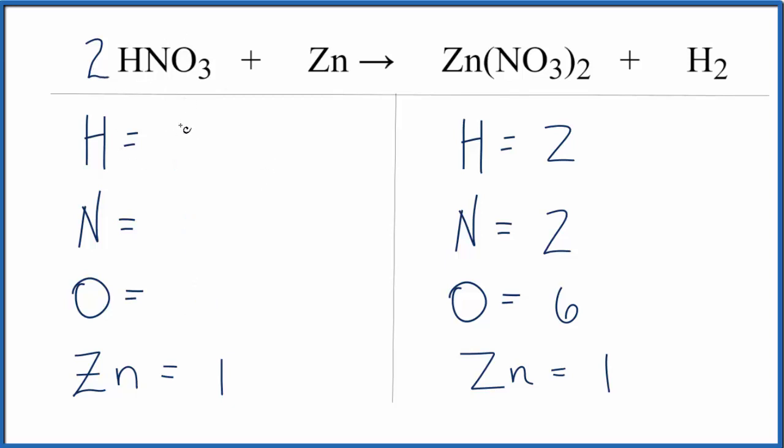We have one hydrogen times two, that gives us two hydrogens. One nitrogen times two, two nitrogens. And then three oxygens times the two, that will give us six oxygens.